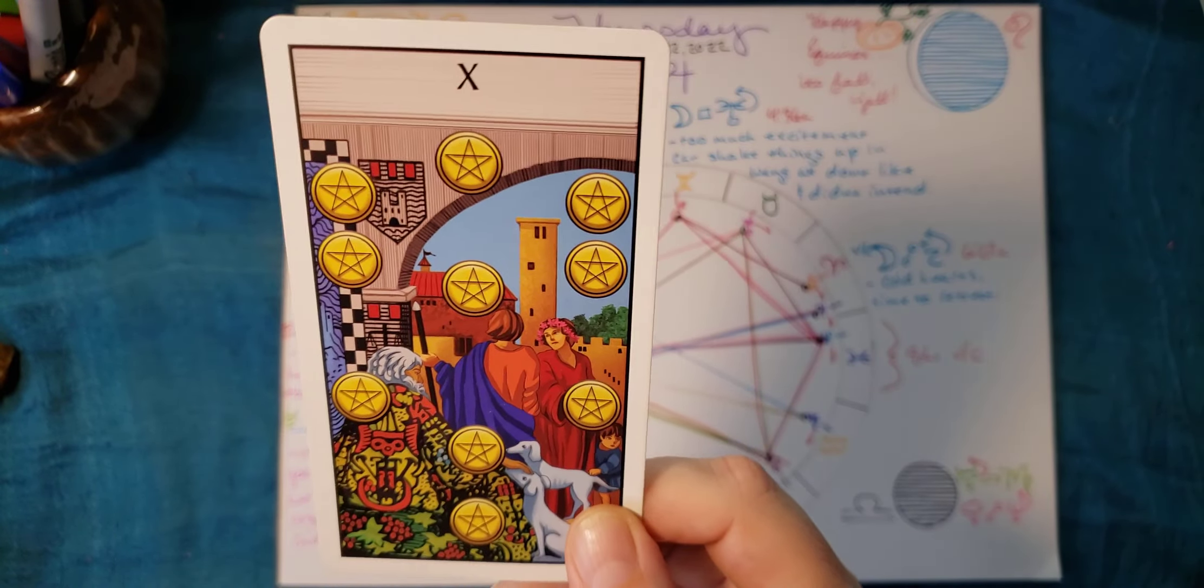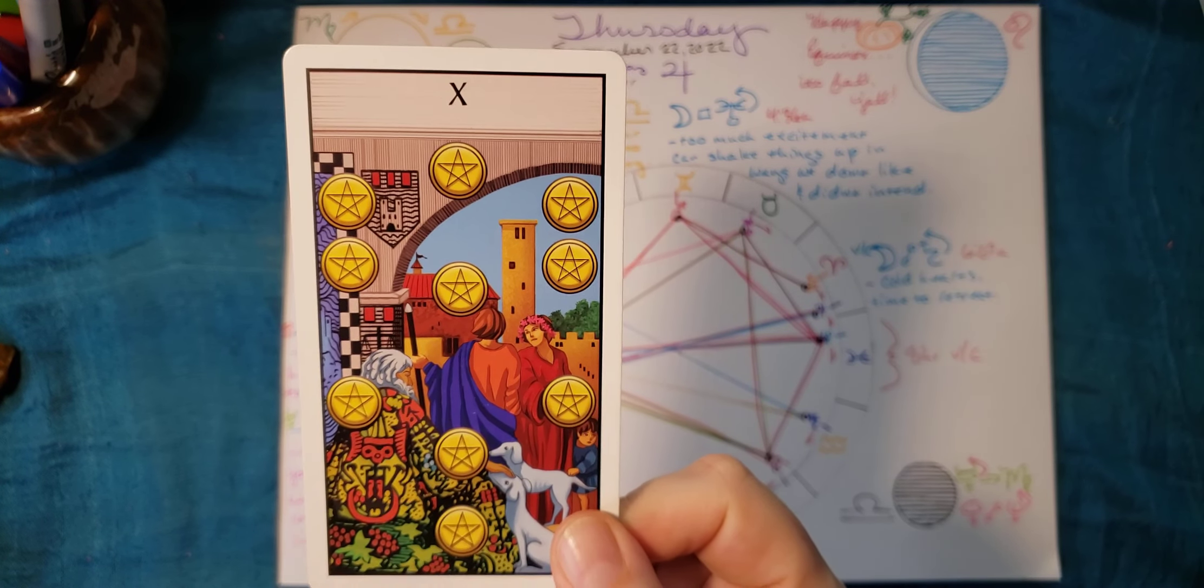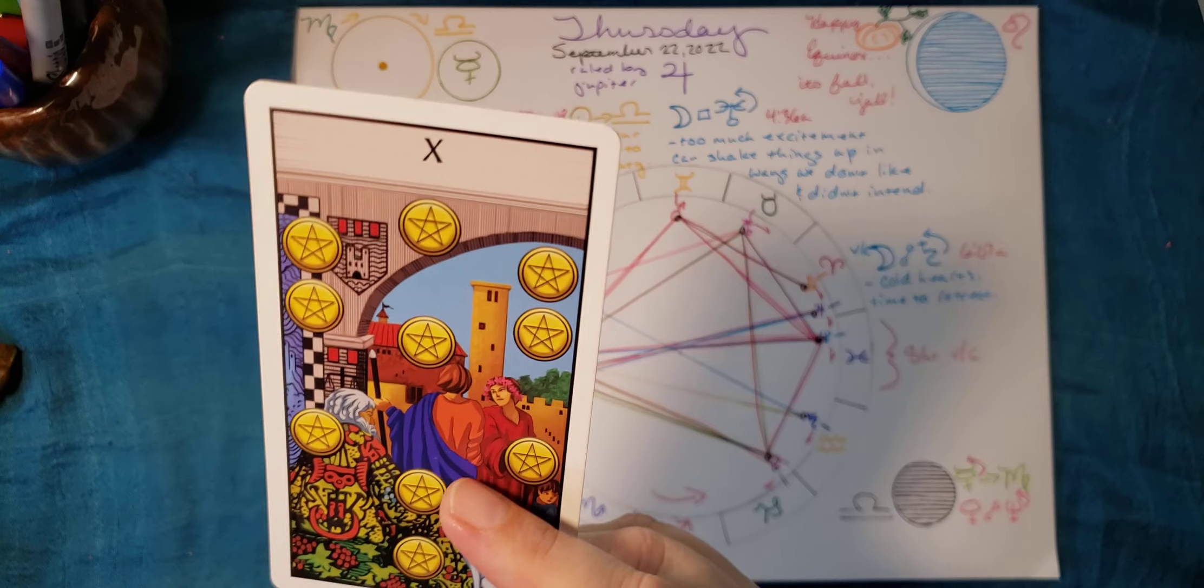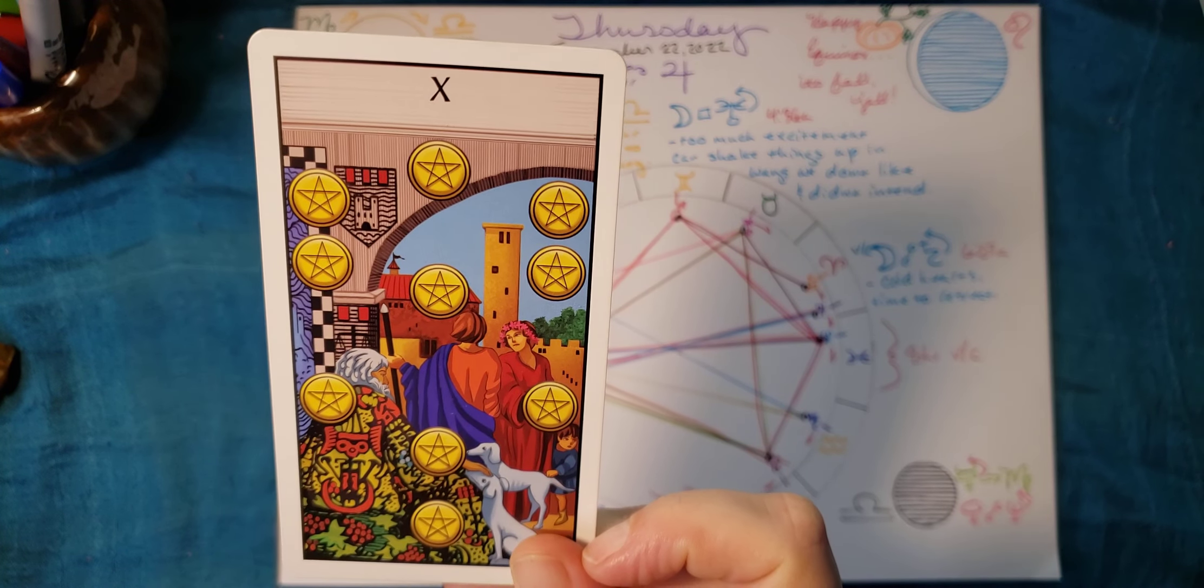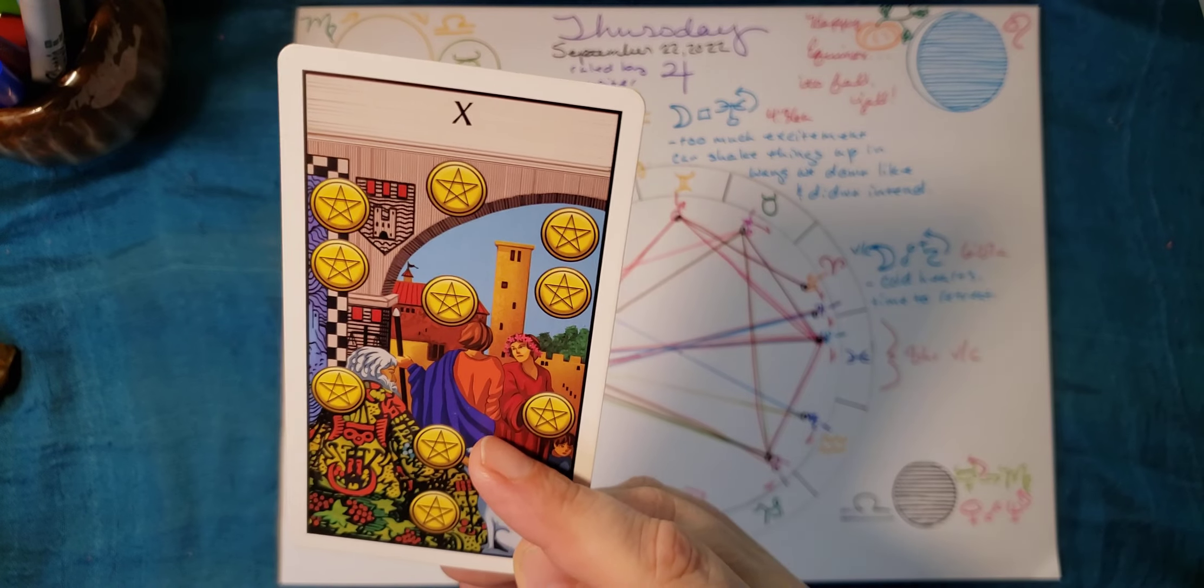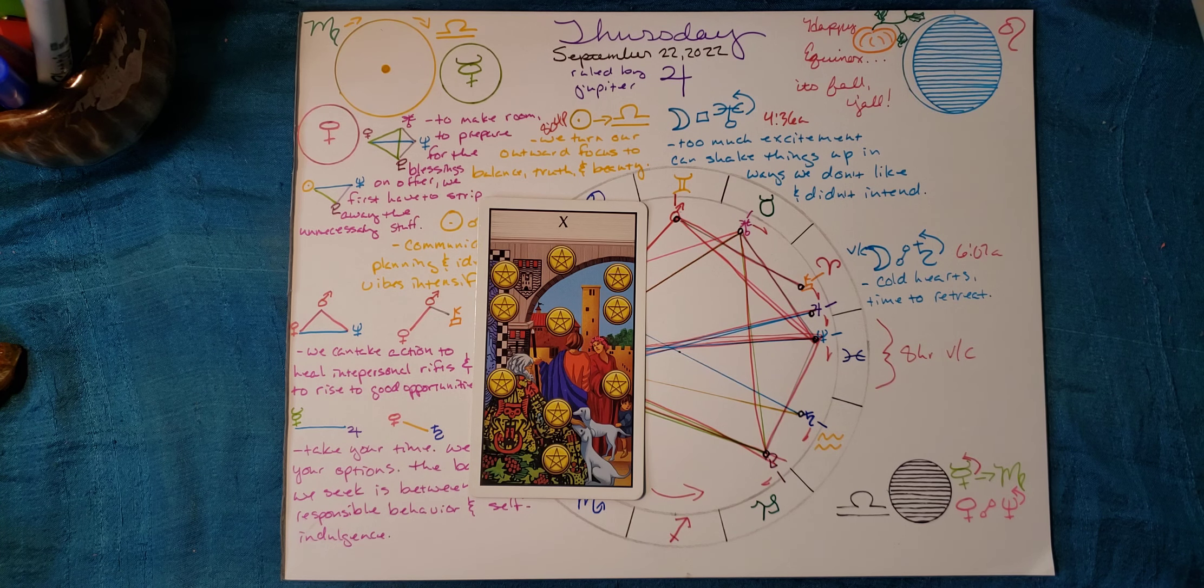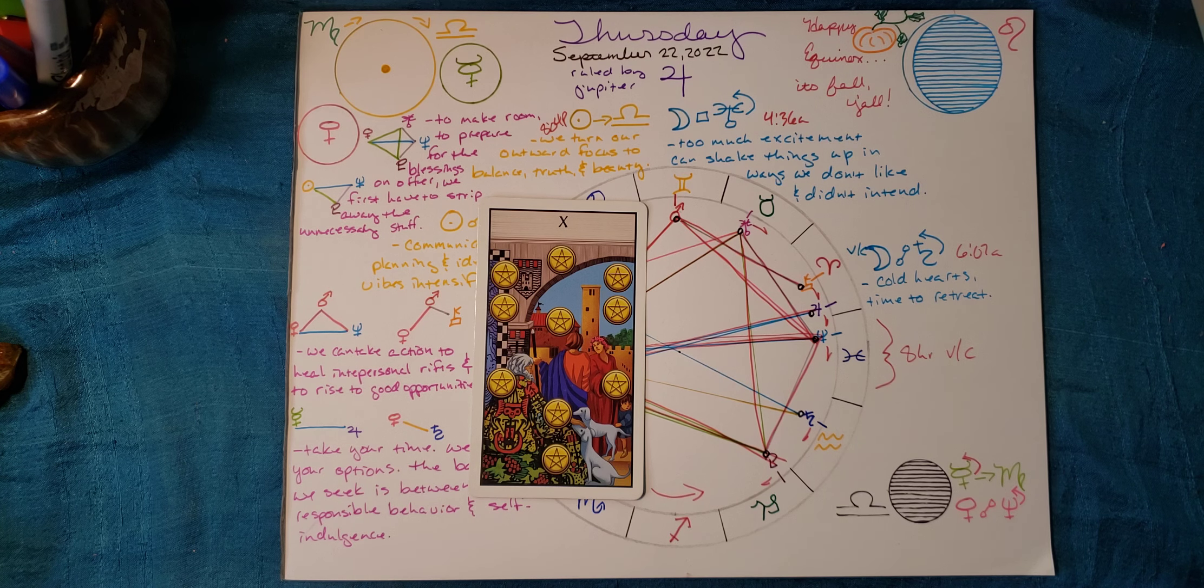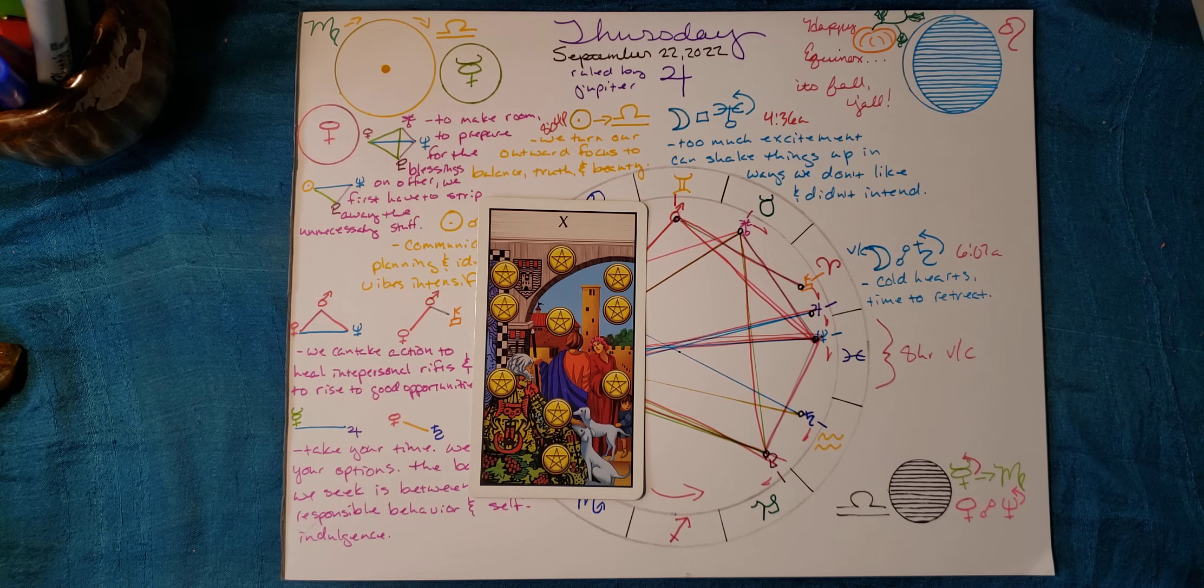So, we come to the Ten of Pentacles. And here we see sort of the ultimate expression of material security. To me, it's as though this person just came home. The Ten is sort of the end of the path in pentacles. So, this person just came home, and what they arrived to is the fact that their home is standing. It's well-appointed. They've got roofs and archways and floors.